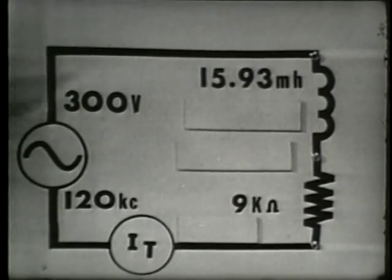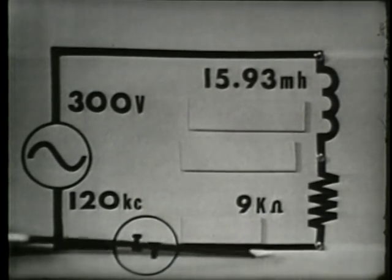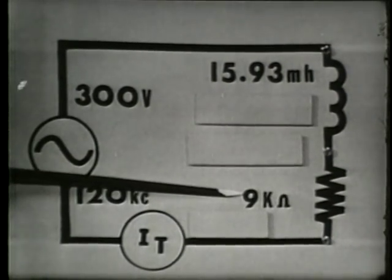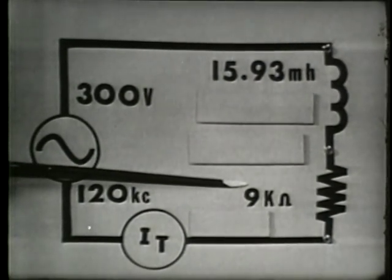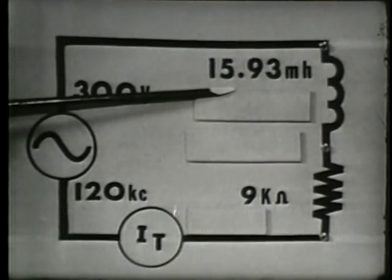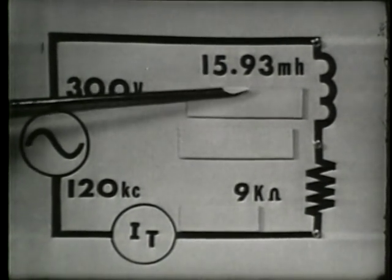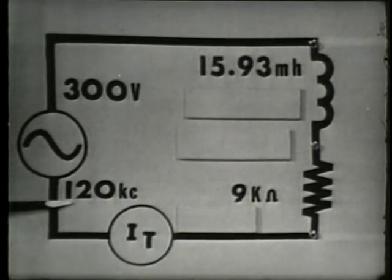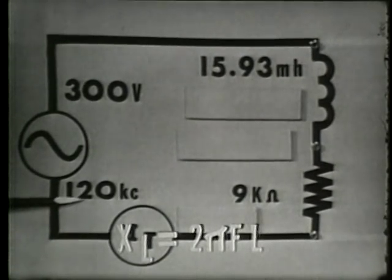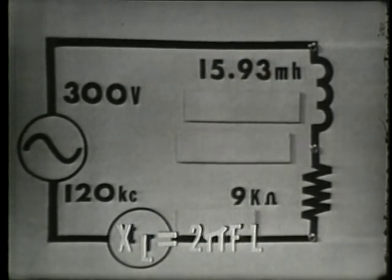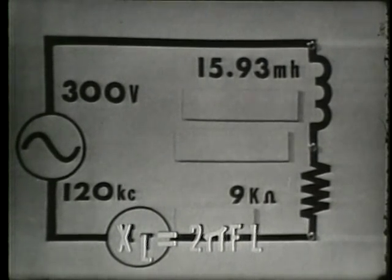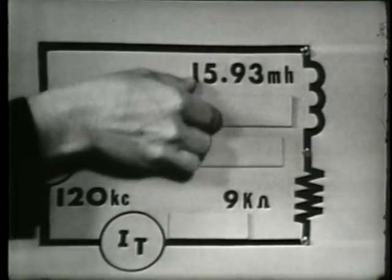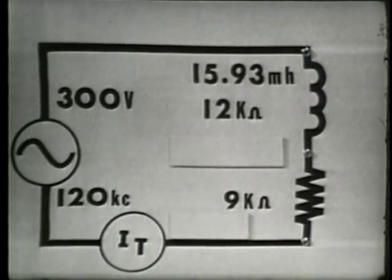To find the total opposition or total impedance, we must find the values of R and X of L. Our resistance is given at 9 K ohms, while we must compute the value of inductive reactance. Since we have the value of L and the frequency applied, we can use the formula two pi times the frequency times the inductance. Multiplied out, we find that the X of L for our circuit is 12 K ohms.